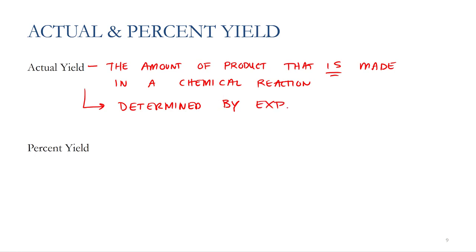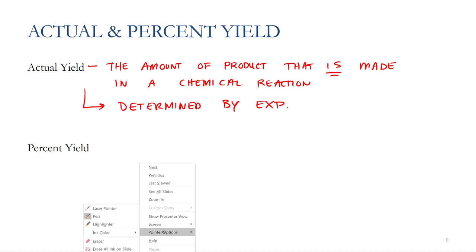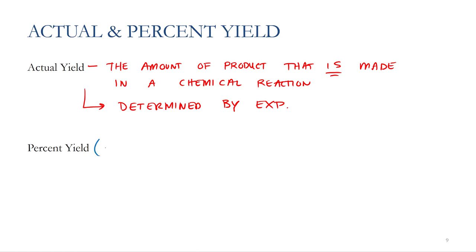Another calculation we're going to want to do to put the actual yield in perspective is the percent yield. The percent yield is the actual yield divided by the theoretical yield times 100%. This puts the actual yield in perspective with the starting materials.